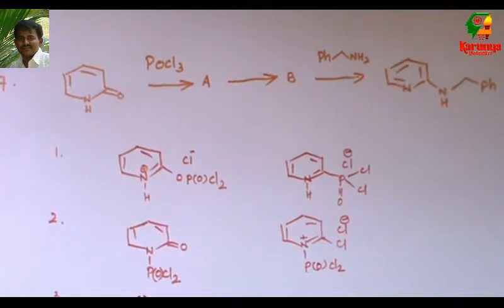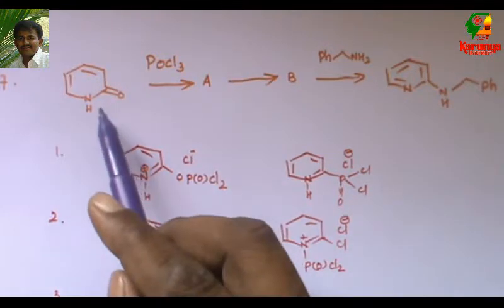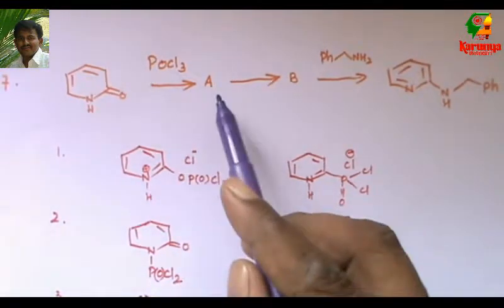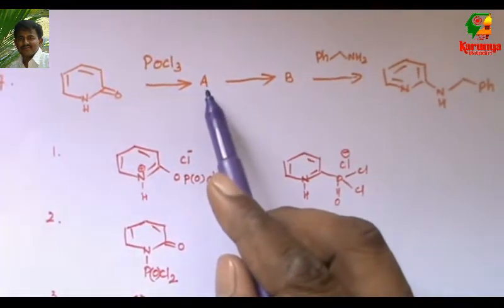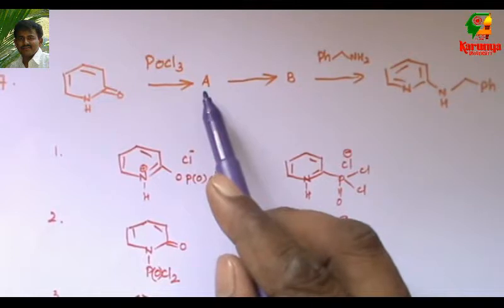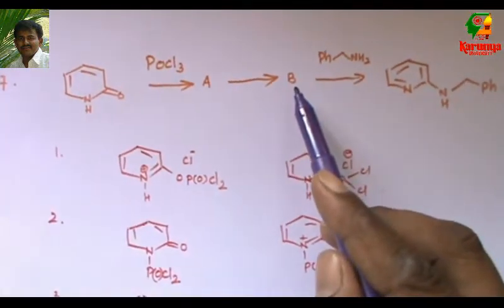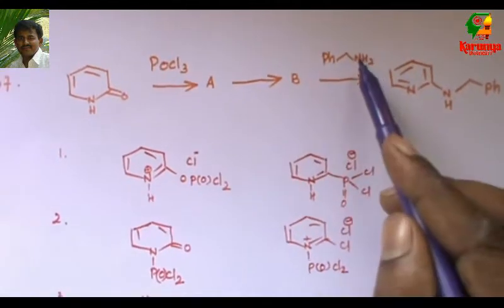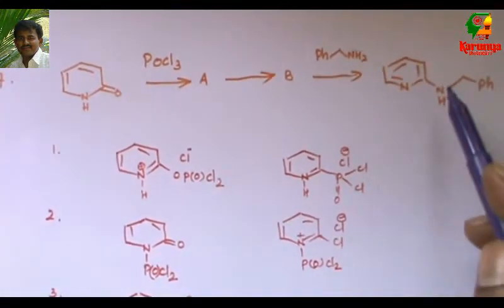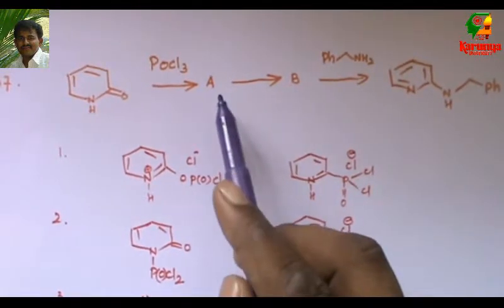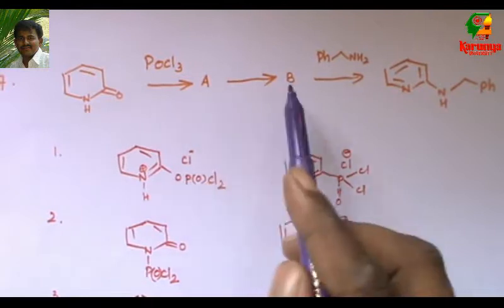Today I am going to solve a problem on the Vilsmeier-Haack reaction. Here is the problem: when this amide is treated with POCl3, it gives intermediate A. That intermediate A decomposes to give intermediate B. That intermediate is attacked by benzylamine to give this product. What are the structures of intermediates A and B?